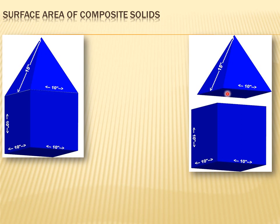This pyramid has a base under here. And when we combine the figures, that base becomes part of the interior, not the surface of the composite figure. There's also a surface that you can't see that the base of the pyramid sits on. That surface is part of the prism that the pyramid sits on. So we can't count the pyramid's base in its surface area, and we can't count the top of the prism in the surface area of the entire prism.